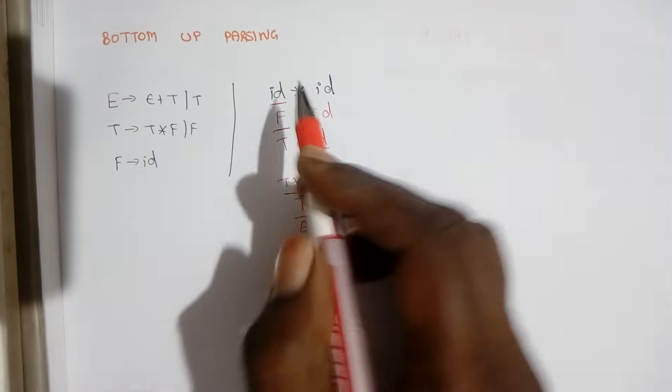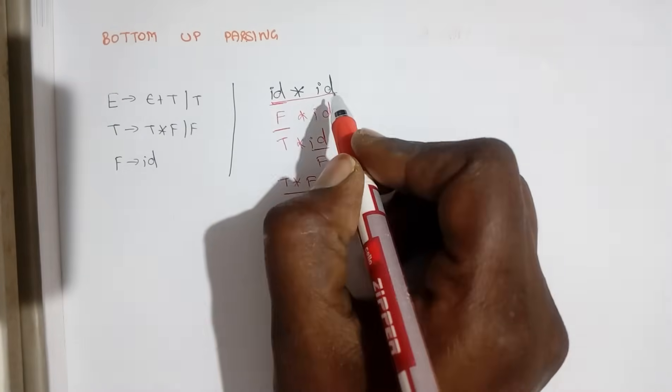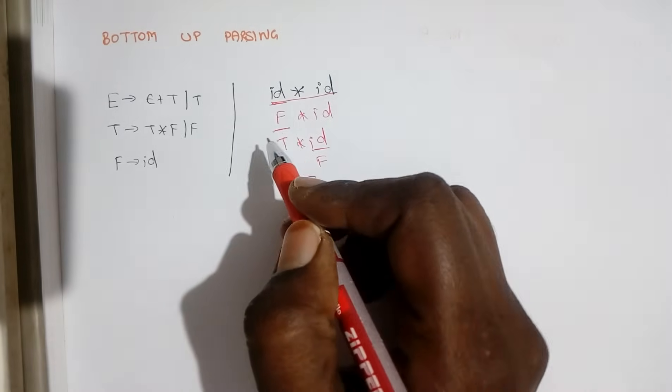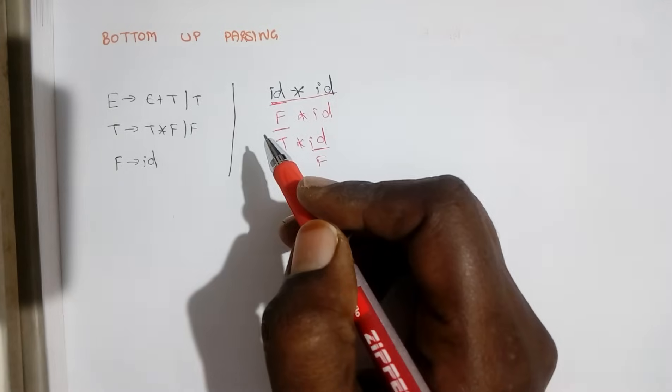So we start with this input symbol, we apply one production at a time. We reduce it. This process is not a derivation, it is opposite to derivation.